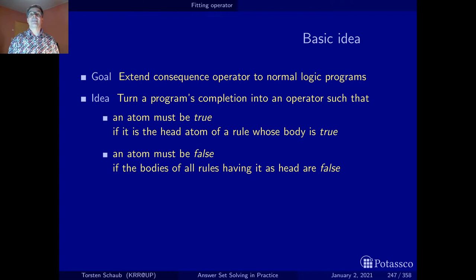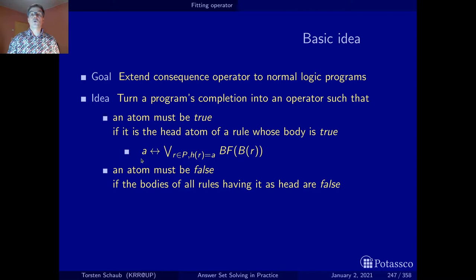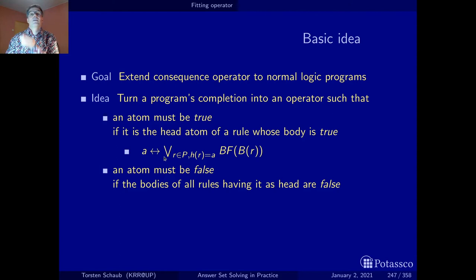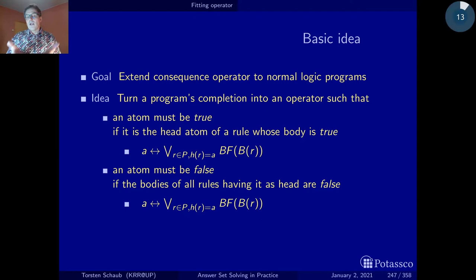You may remember program completion — it actually results in a set of equivalences. Such an equivalence says that an atom is true if and only if one of the bodies of the rules that have this atom in the head has also been found to be true. So we have a disjunction, meaning there should be one rule that has this atom in the head whose body was found to be true.